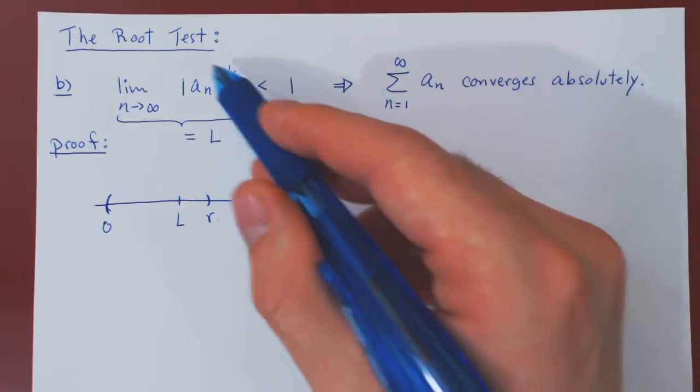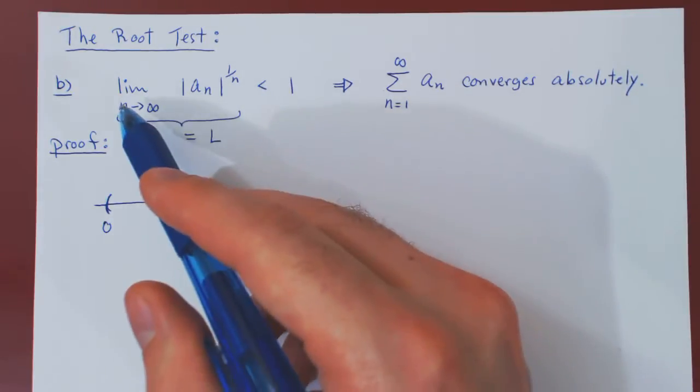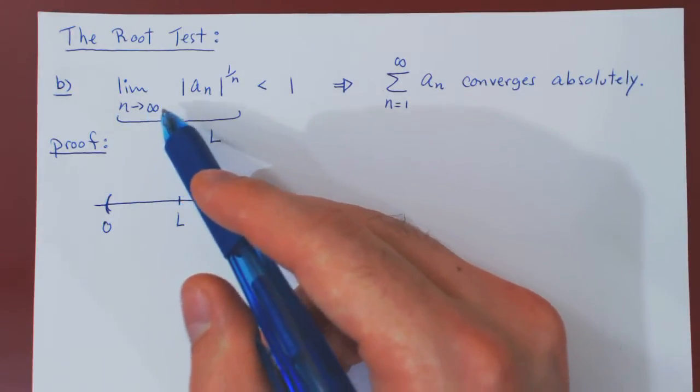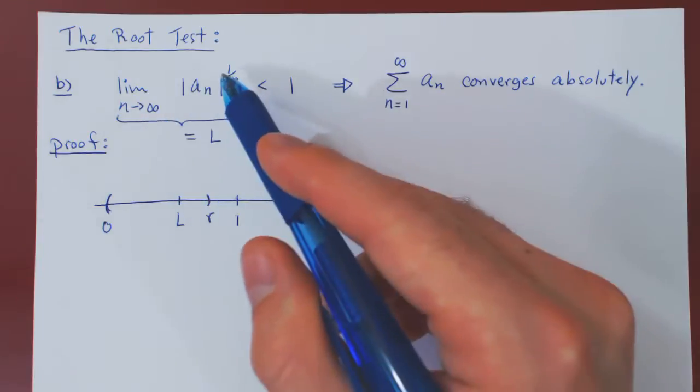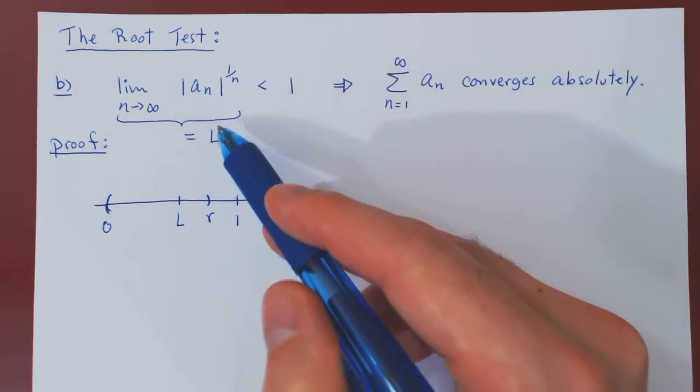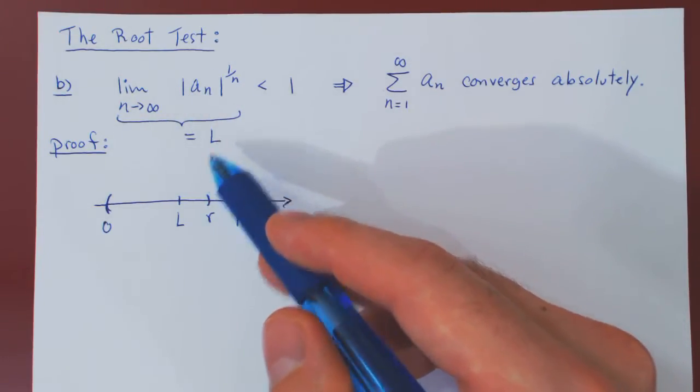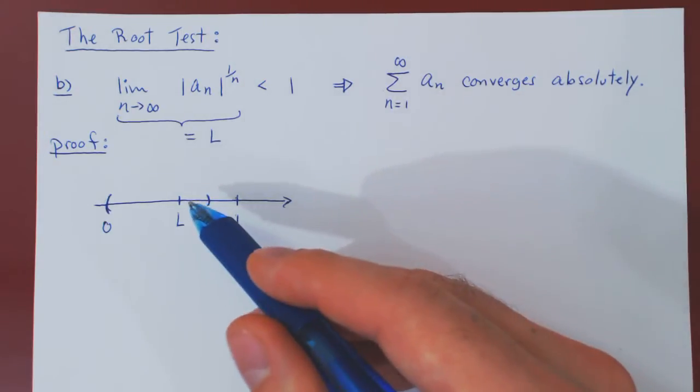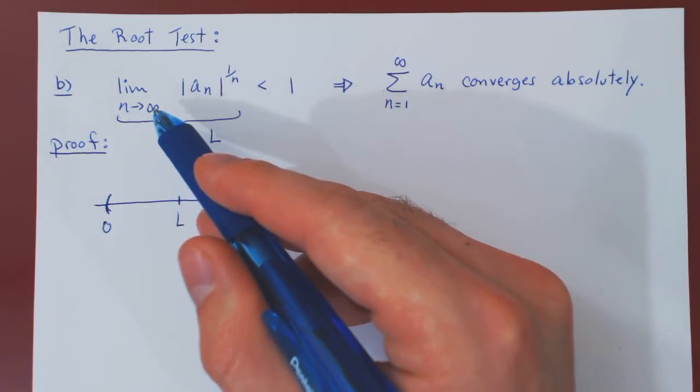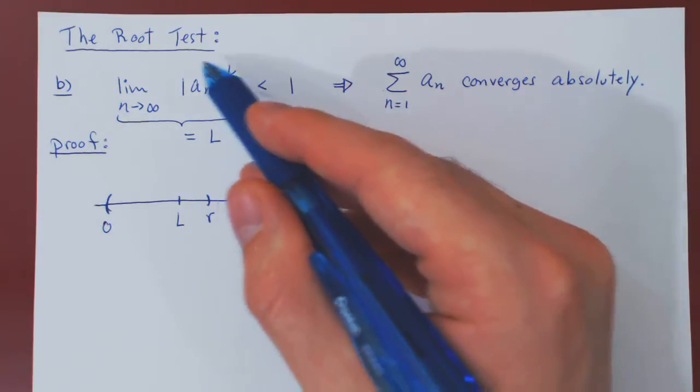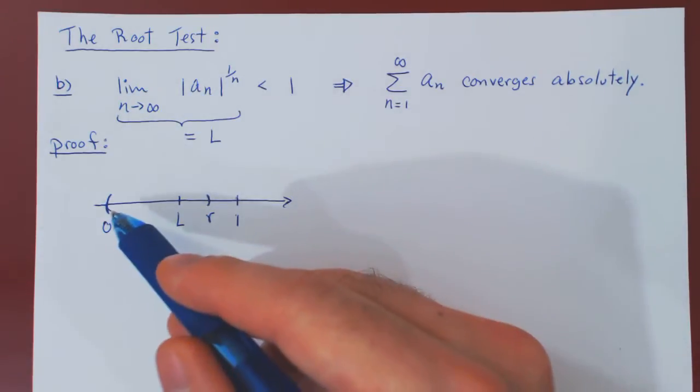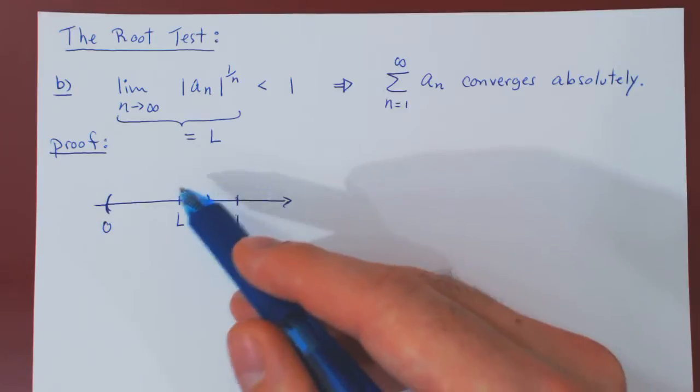Now, if we ask ourselves, well what is this really saying? This is saying that when n is becoming larger and larger, the terms of our sequence are getting closer and closer to L. Well, how close? As close as we want. Therefore, if we take n to be big enough, we can make every term of our sequence fit inside of our small interval around L.